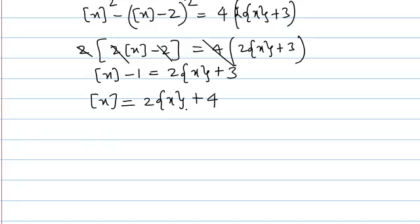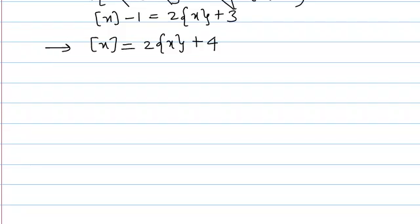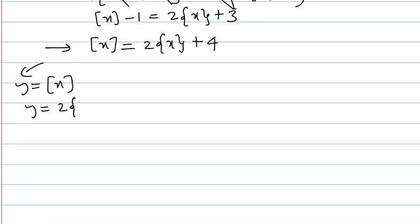Now we have to solve this equation. One approach is mathematical but I don't suggest that first. The better approach is to try graphically — if it's difficult to find points of intersection graphically, then we come back to the mathematical approach. We need to find the number of solutions, so we draw y equals greatest integer of x and y equals 2 into fractional part of x plus 4.